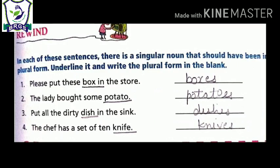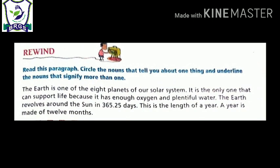So here are your answers. Now let us do one more activity. You have been given one paragraph and we have been asked to circle the nouns which tell us about one thing and underline the nouns which signify more than one thing.